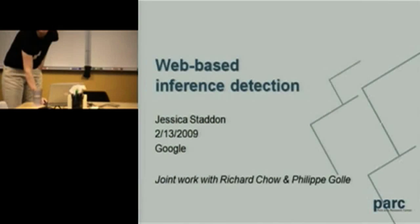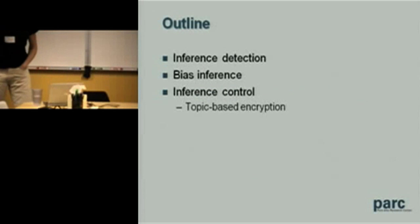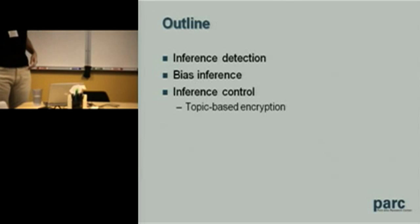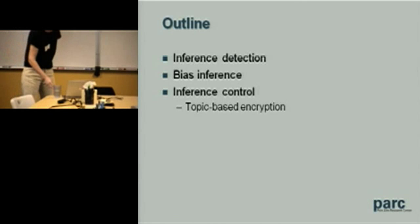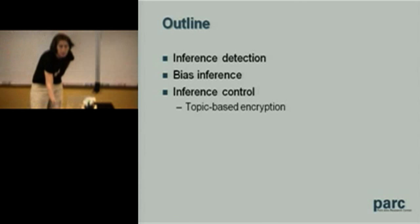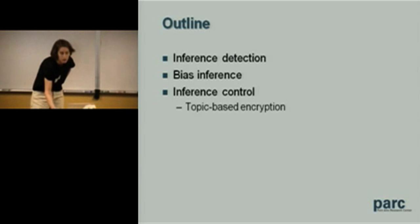This is joint work with Richard Chow and Salih Goulet. Just a brief outline: first I want to explain what we mean by inference detection, because inference is an ambiguous term. I'll talk about our technique, describe how it can be used to detect bias, and if there's time, talk about how you might use inference detection to do better access control.